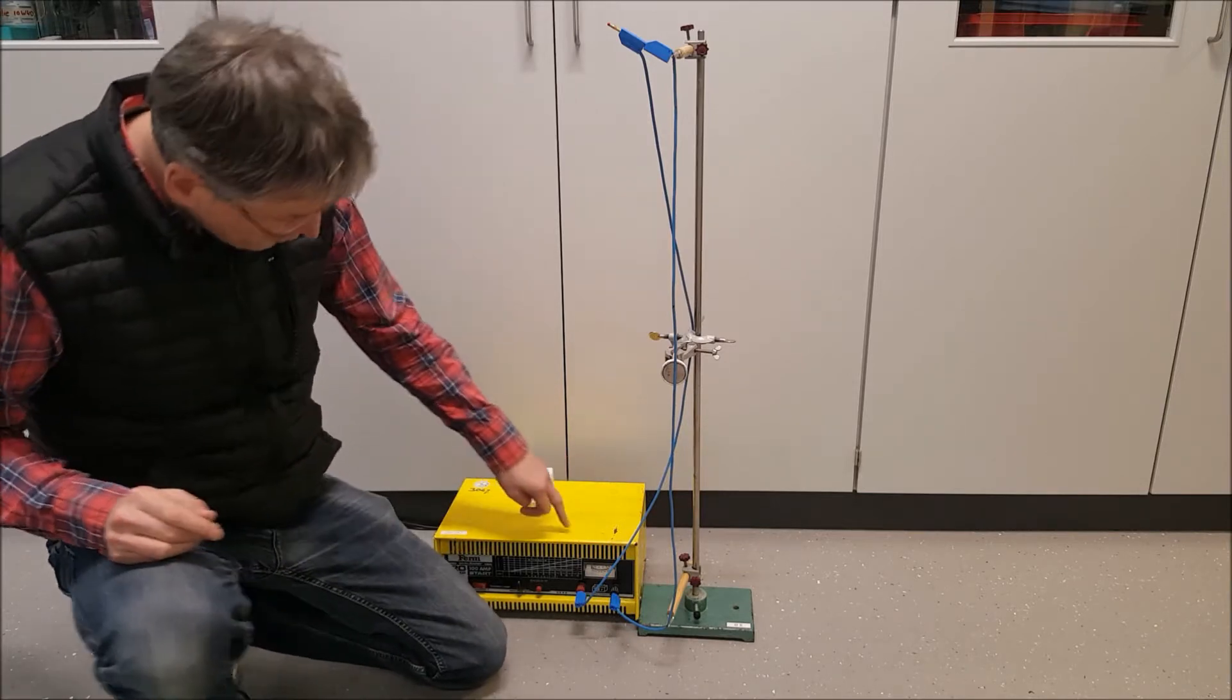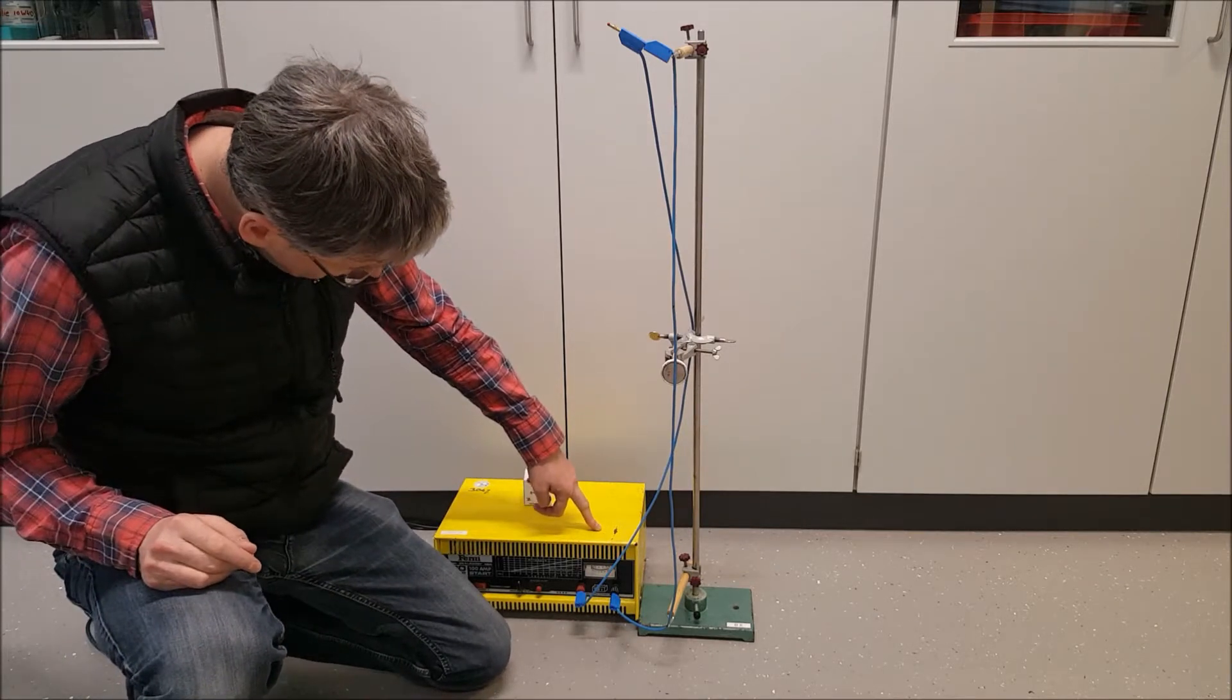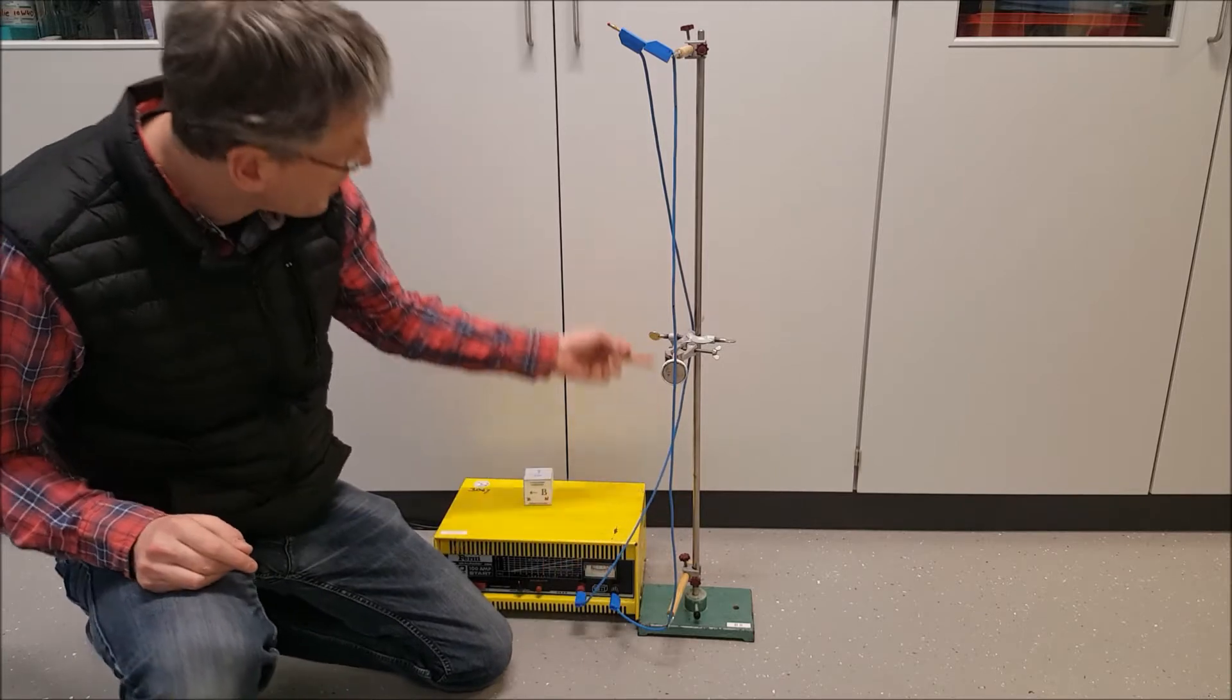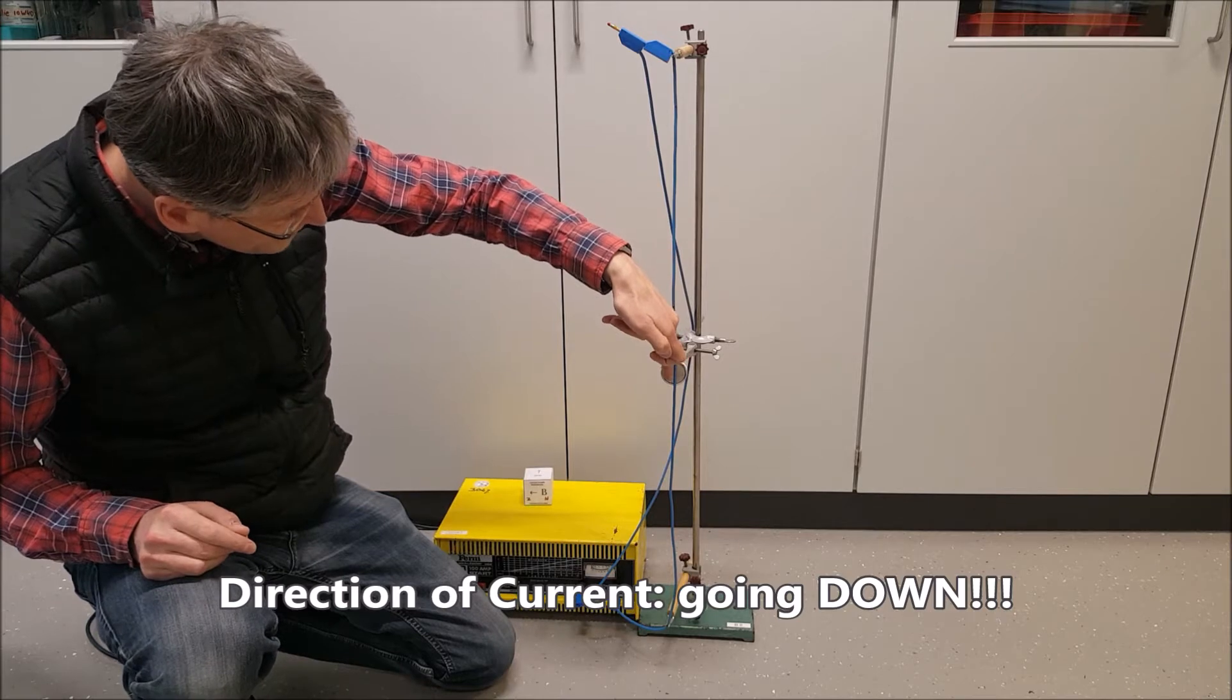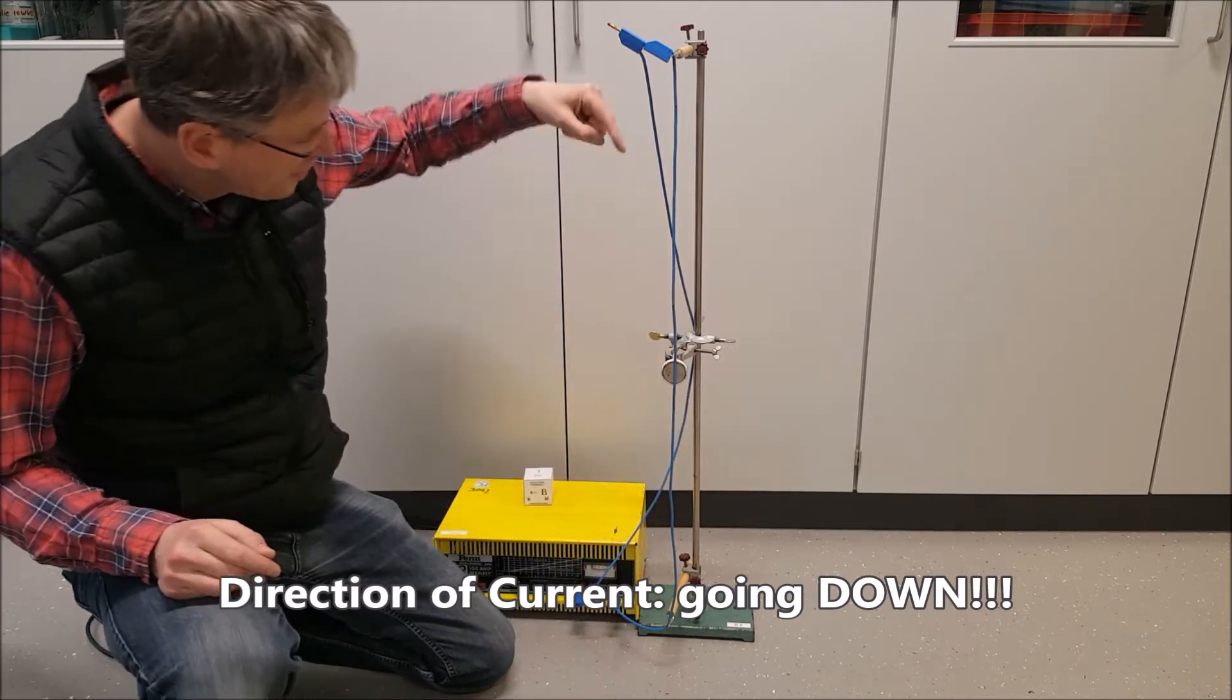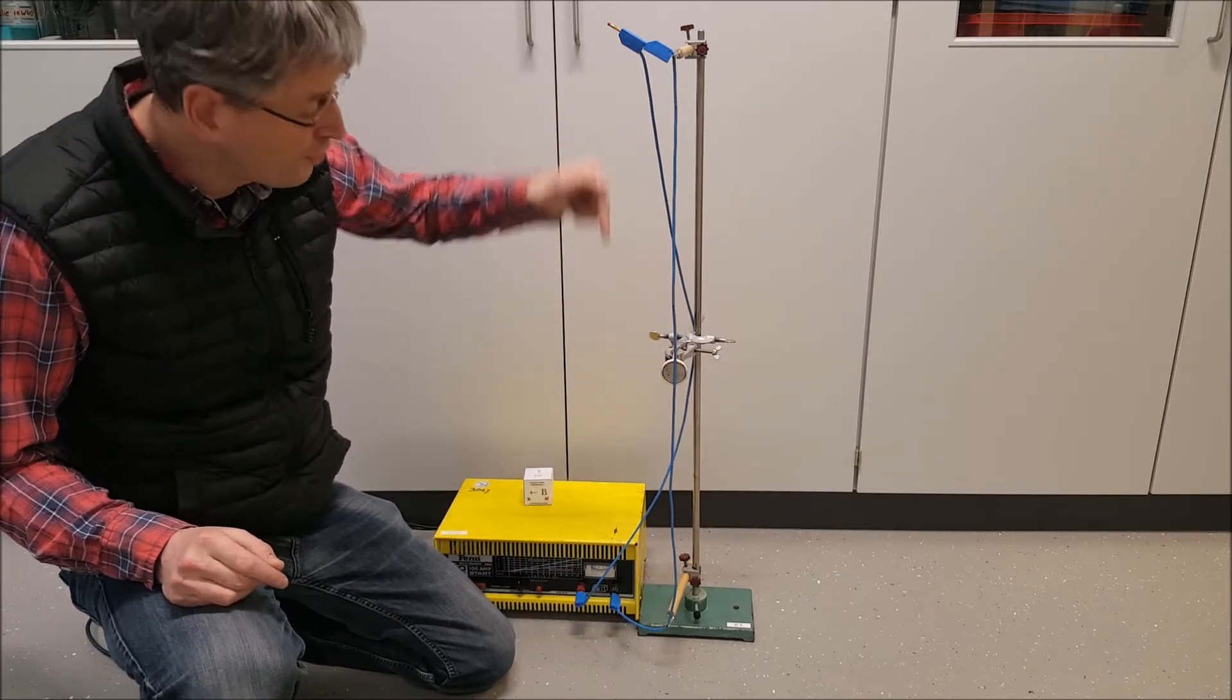Well, the current is being provided down here by this battery charger. The plus is going up, so then the current is going down in front of this magnet. So the direction of the current, that's for sure, is going down.